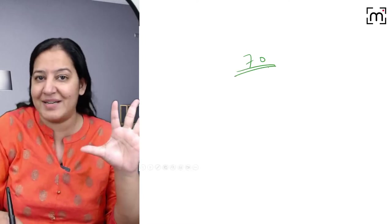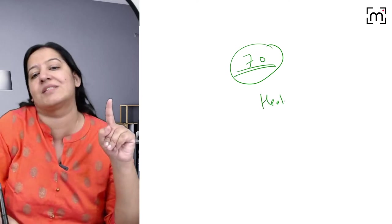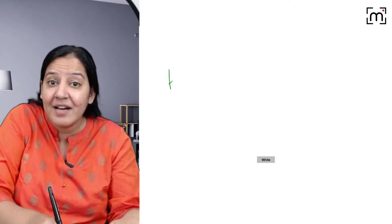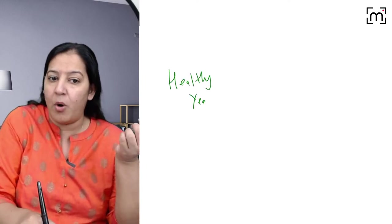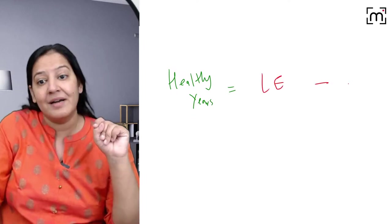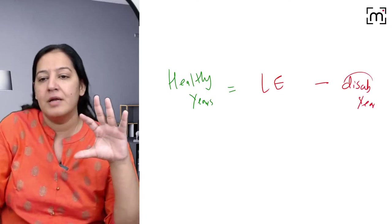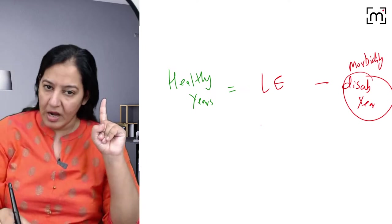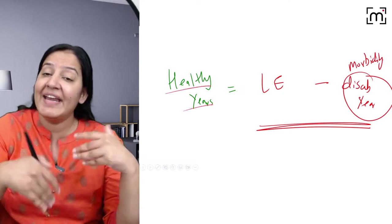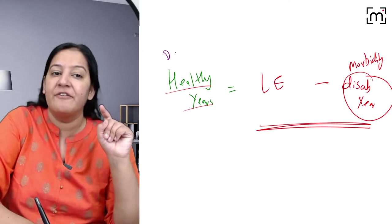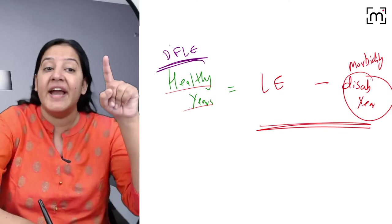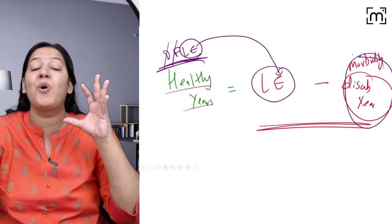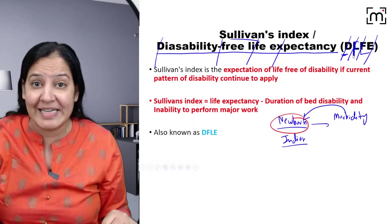Whatever life we are living — suppose 70 years — the total years don't matter. What matters is how many healthy years you are surviving. Healthy years equal life expectancy minus disability years. Disability years are calculated by applying morbidity. After subtraction, whatever value comes is the life spent in healthy years — that is Disability Free Life Expectancy, also known as the Sullivan Index.